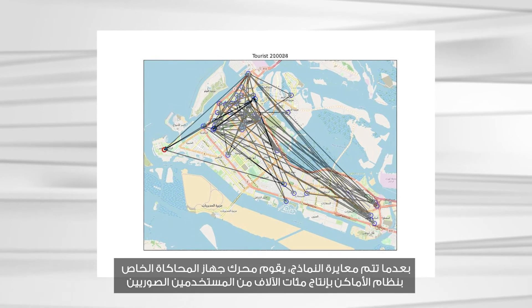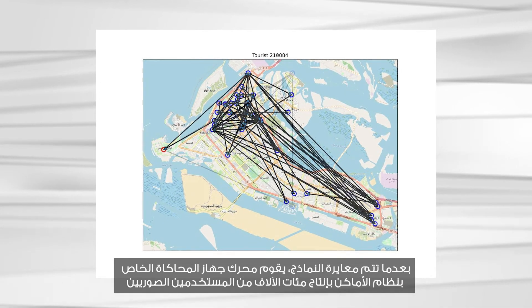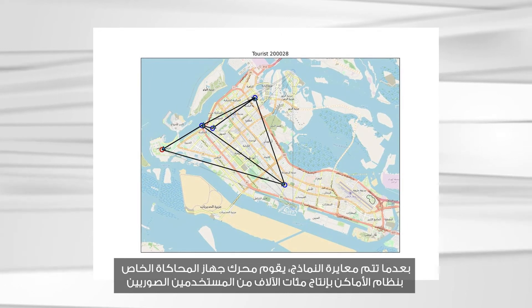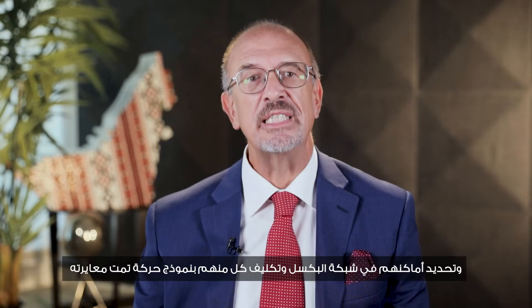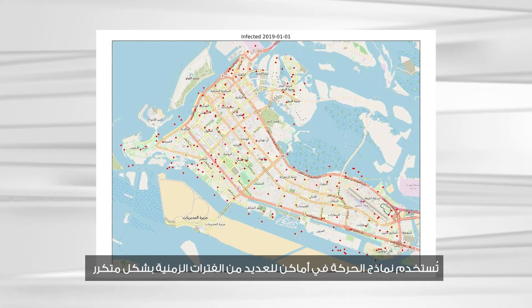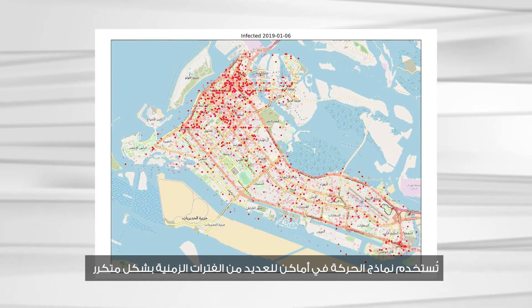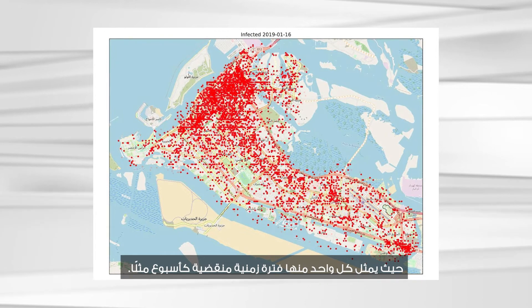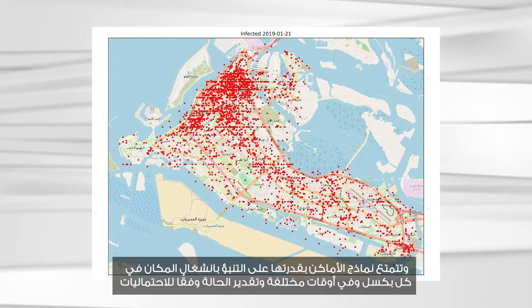Based on this information, PLACES calibrates internal mobility models which capture how many pixels each person will be visiting in the course of a time period and for how long each person will remain in each pixel. Once the models are calibrated, the PLACES simulator engine generates hundreds of thousands of simulated users, places them on the pixel grid, and assigns each to a calibrated mobility model. Each simulated user is also assigned an initial condition, for example infected or non-infected. PLACES mobility models are iteratively run for multiple epochs, each corresponding to an elapsed time period such as a week, and can predict the occupancy of each pixel at different times and estimate the propagation of the condition according to encounter probabilities.